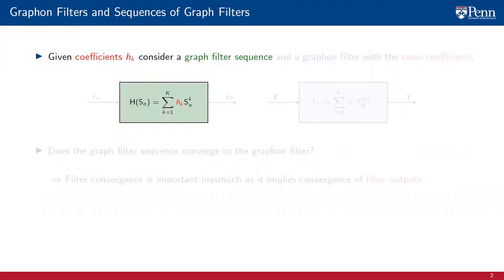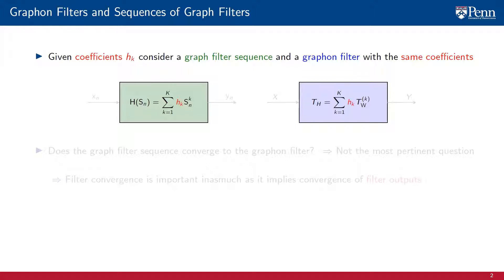We are given a set of filter coefficients hk, which we use to construct a sequence of graph filters defined over a sequence of graphs. For each shift operator Sn in the graph sequence, we have a filter h in the graph filter sequence, defined as the usual polynomial with coefficients hk. We also use the same coefficients to build the graphon filter, which is a polynomial with the same coefficients but one in which the variable is the graphon shift operator Tw.